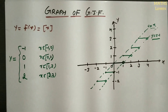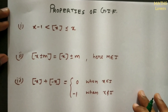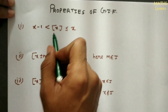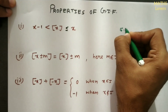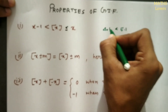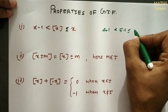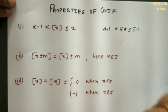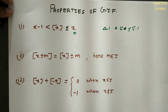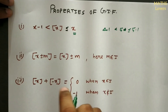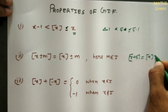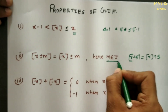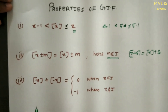Now let's check the properties of GIF. The first property is that the greatest integer of x lies between x minus 1 and x, that is x - 1 < [x] ≤ x. For example, for 5.1, the greatest integer is 5, which lies between 4.1 and 5.1. The second property is that if m is any integer, it can be taken outside: [x + m] = [x] + m. This applies for addition and subtraction.